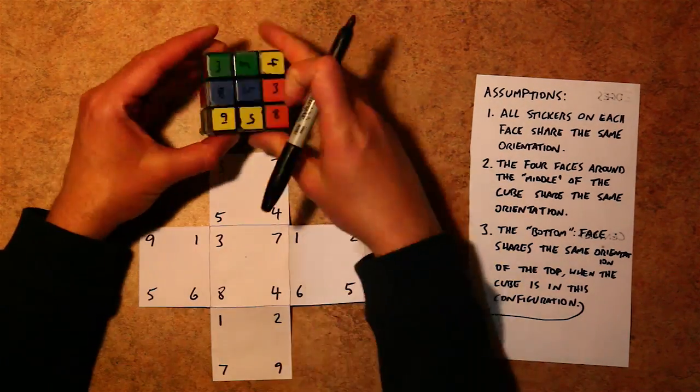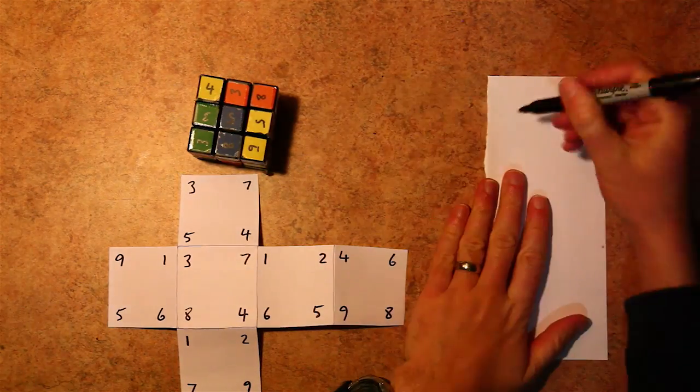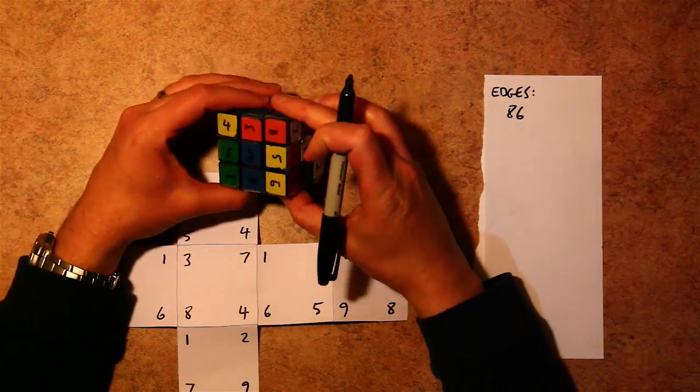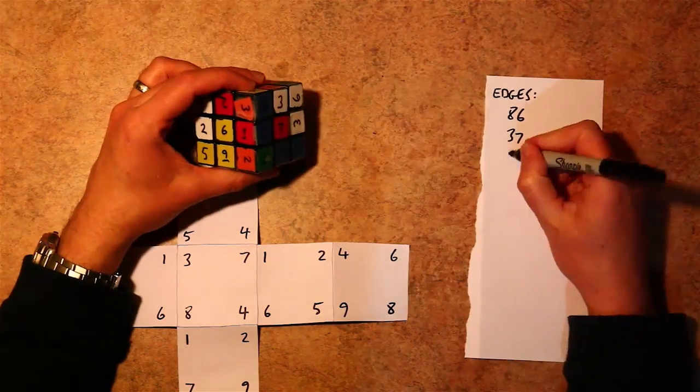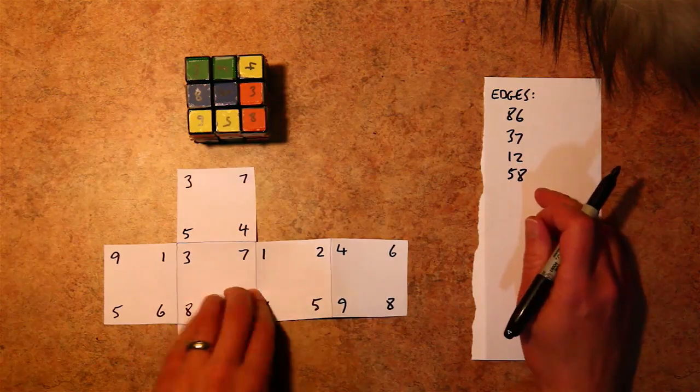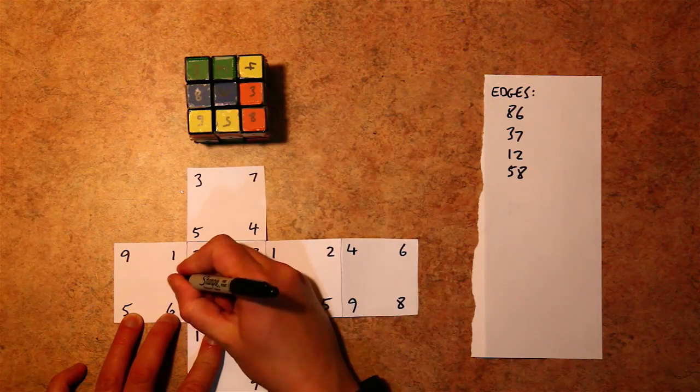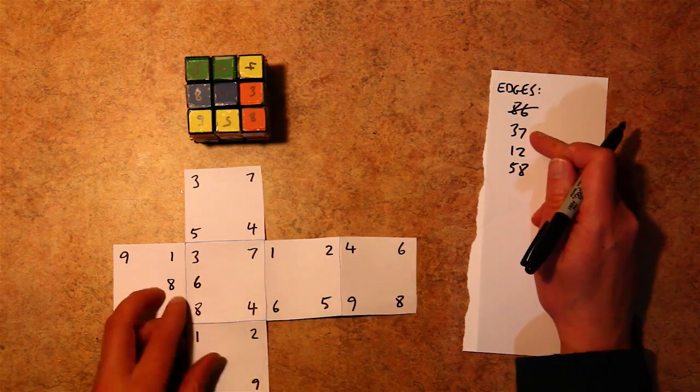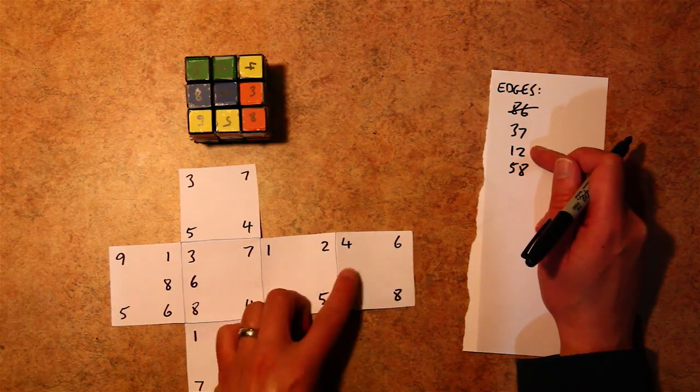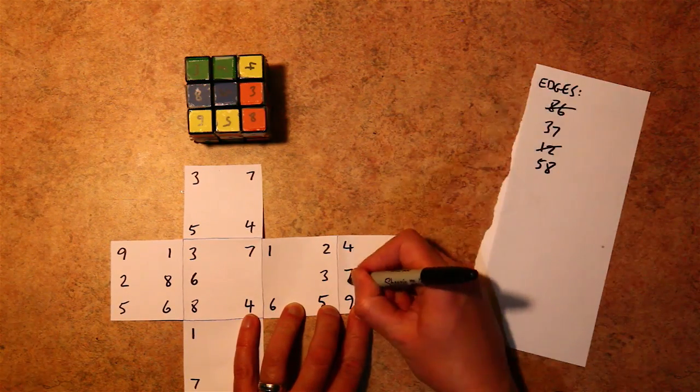Once we have the corners mapped out, it's time for the edges. Now, there are four edges along the middle that have numbers that are the same orientation, that are numbers side by side together. So in order to figure out which of the four edges go where, first we list them. And then we can use our Sudoku skills to match up the numbers with the corners. And through a process of elimination, we can determine which edges go in which location.